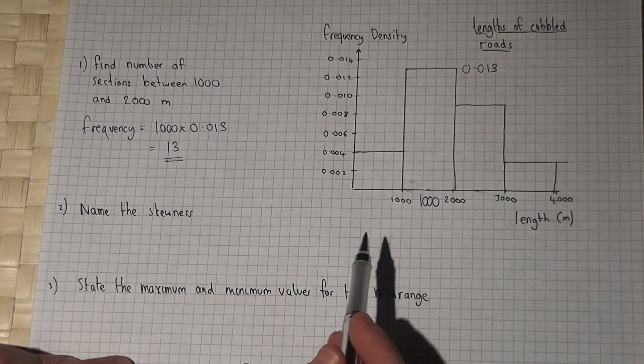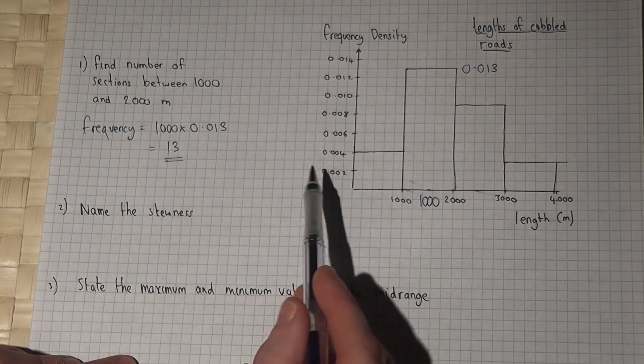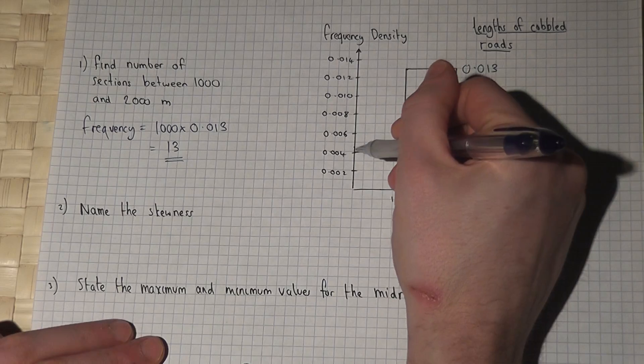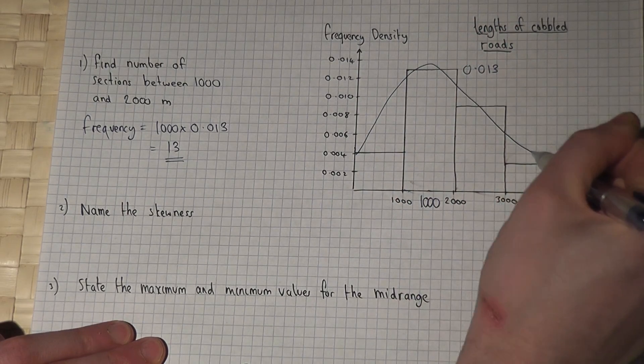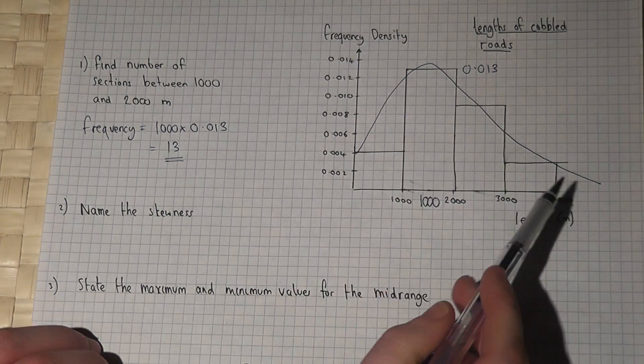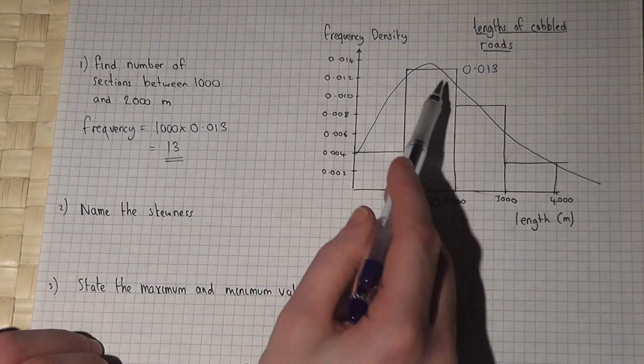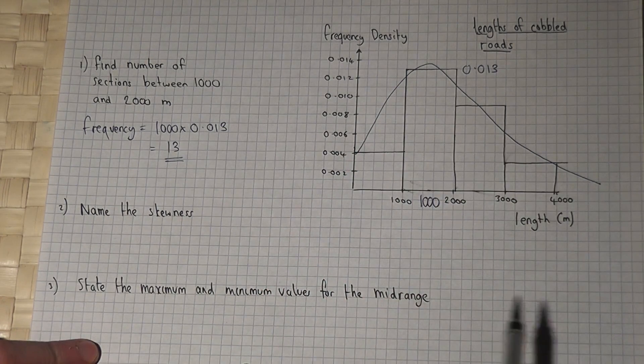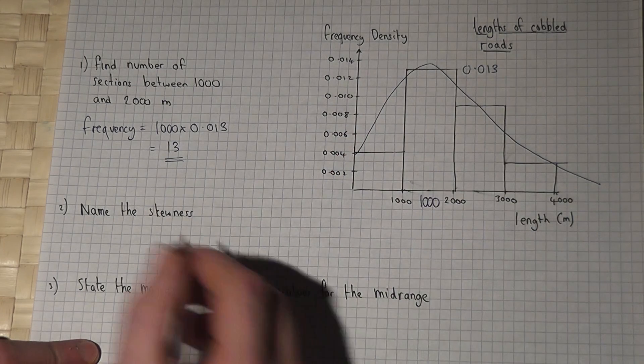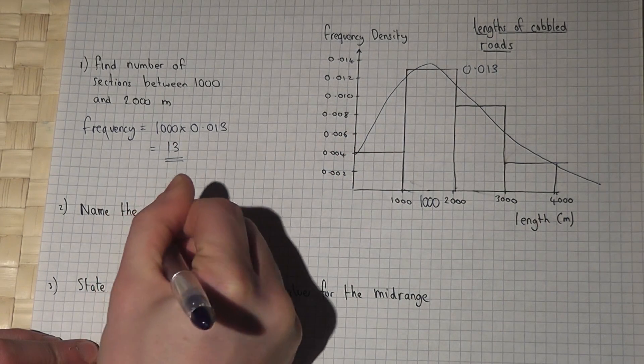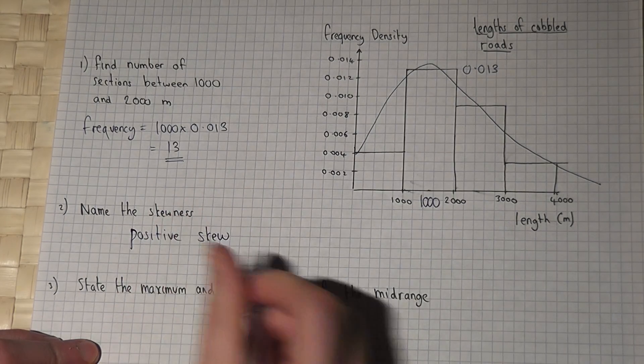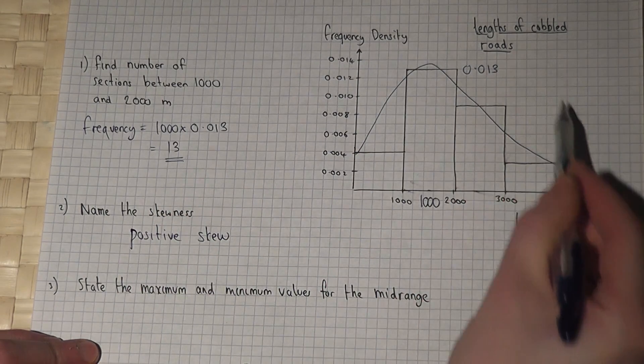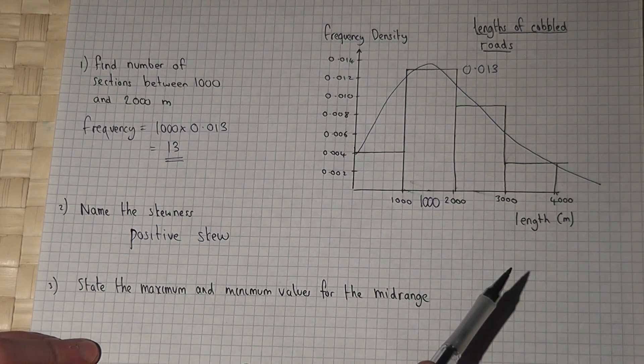This graph also has a skew—it's not symmetrical. Looking at the rough shape, the peak of the graph is to the left and it tails off to the right. This shape is called a positive skew. If the peak was to the right, it would be a negative skew.